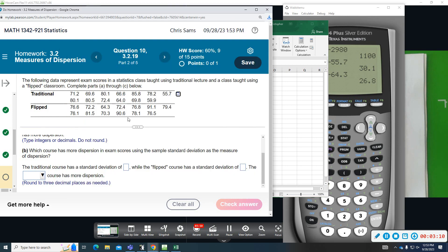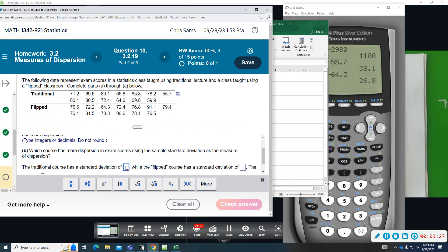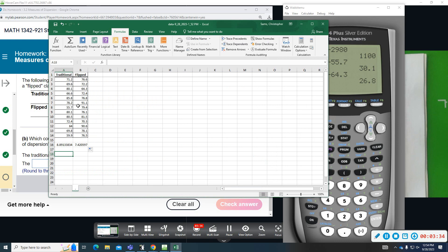So since these data points have one decimal place, normally you want to go to two. Down here they say go to three. So I'm going to go three decimal places. The traditional had a standard deviation of 8.891. The flipped had a standard deviation of 7.421.